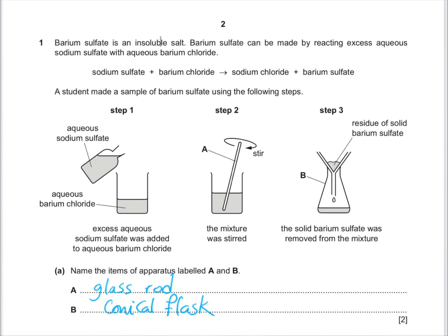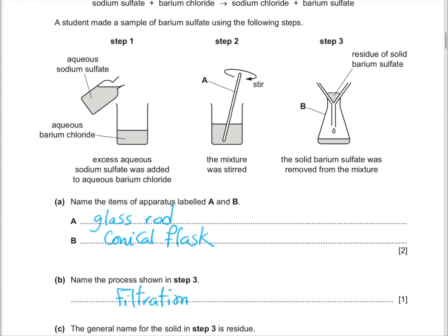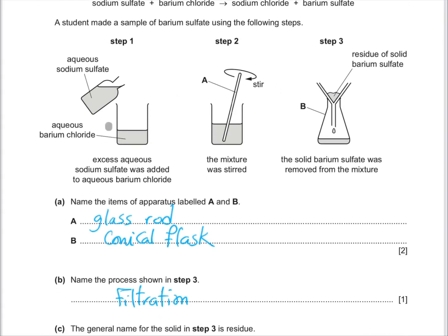Barium sulfate is an insoluble salt. Barium sulfate can be made by reacting excess aqueous sodium sulfate with aqueous barium chloride. Sodium sulfate with barium chloride produces sodium chloride and barium sulfate. A student made a sample of barium sulfate using the following steps. He added aqueous sodium sulfate with barium chloride. He said excess aqueous sodium sulfate was added to aqueous barium chloride.